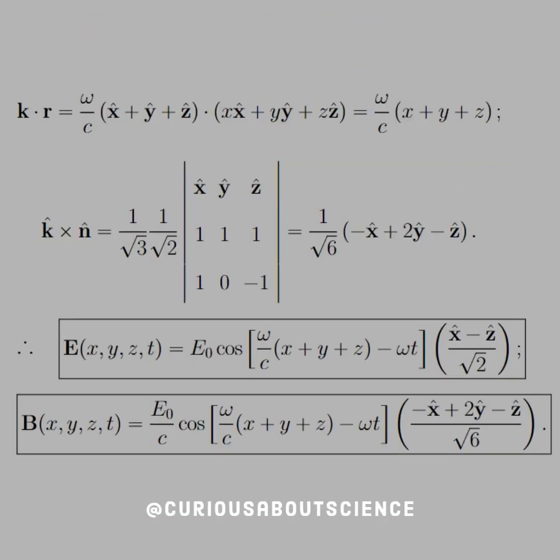That is wonderful to see. Pretty clever trick, in my opinion. Then, of course, K dot R, we see that we just get omega over C times (X plus Y plus Z). K cross N is just a cross product. So, we just take the factor of 1 over square root of 3 and 1 over square root of 2 out, leaving us with a direction of 1 over square root of 6 times (negative X hat plus 2Y minus Z hat). And thus, what we see here are the B and E fields written.